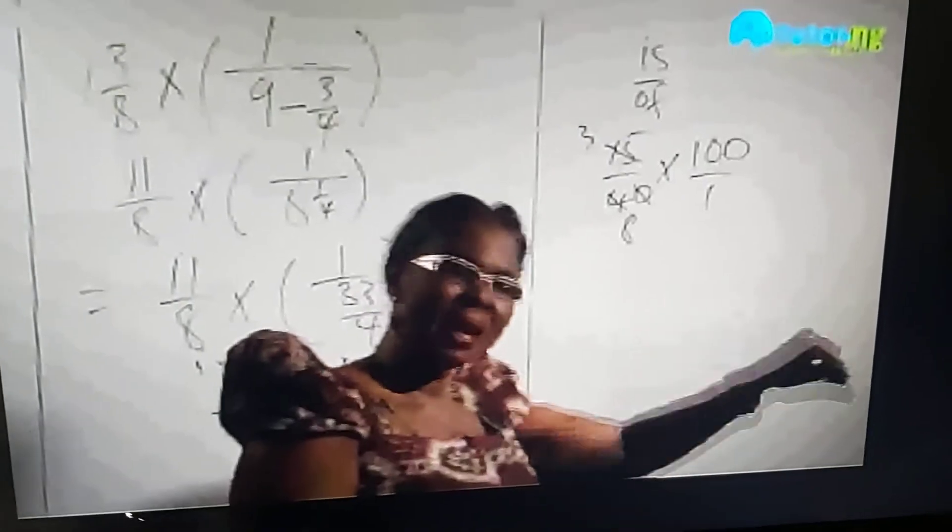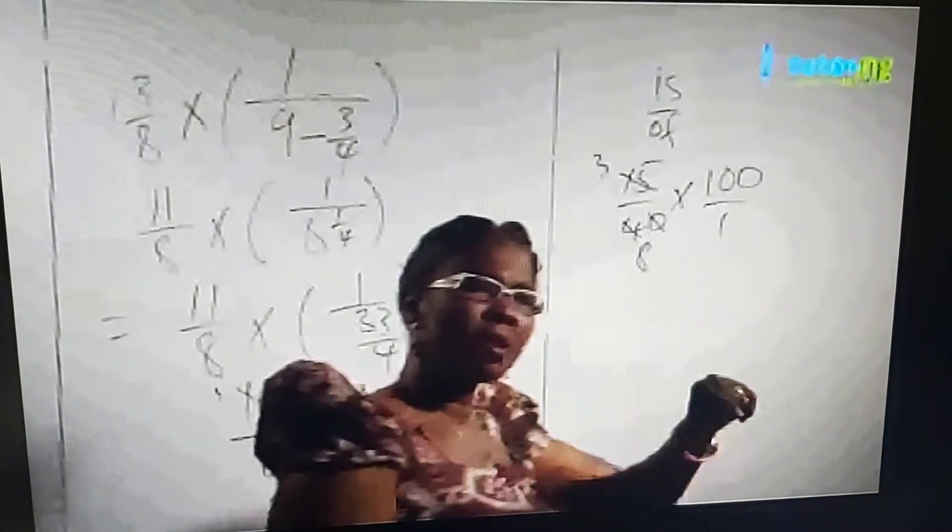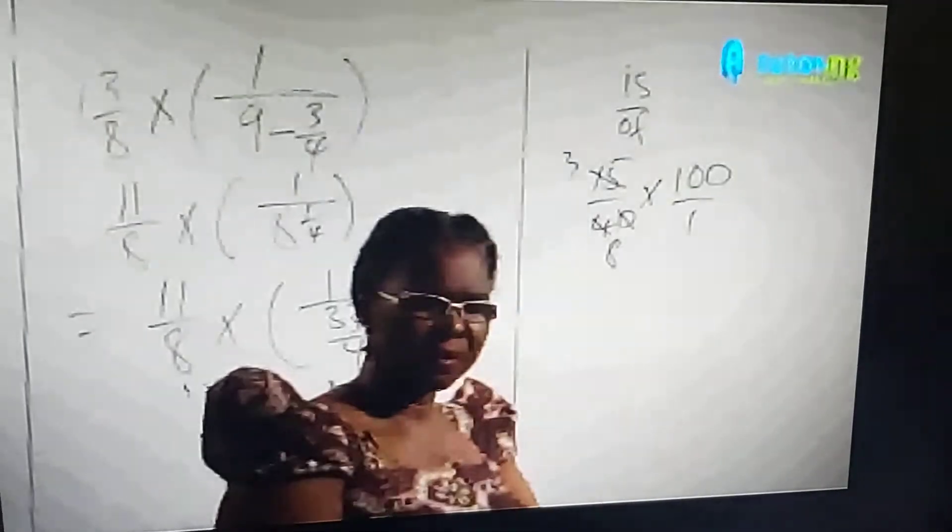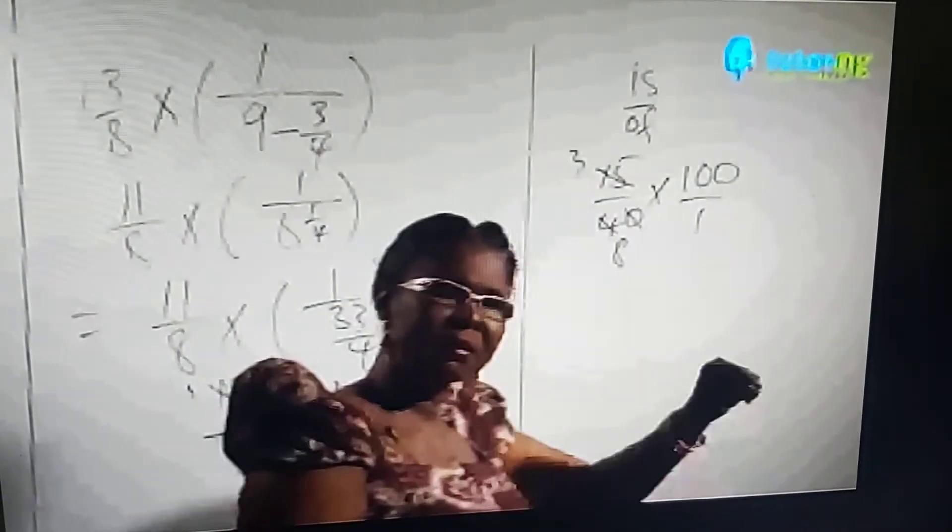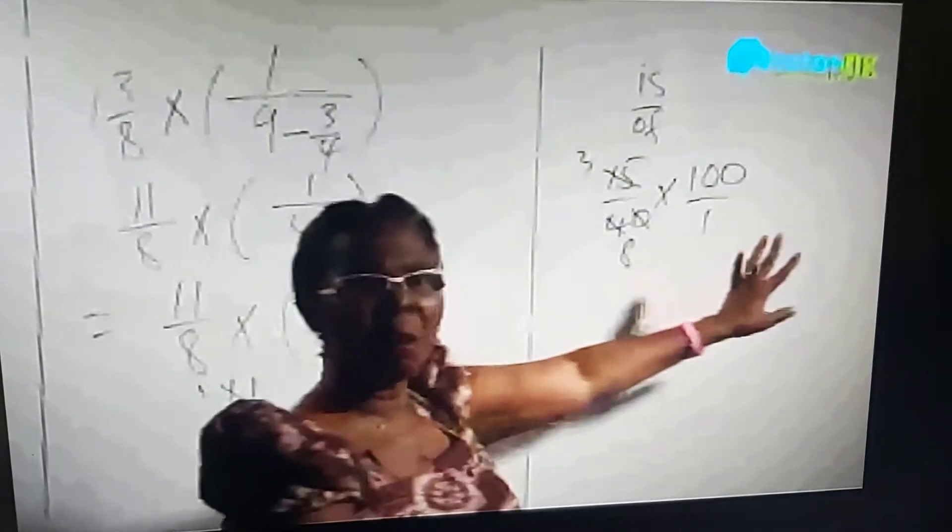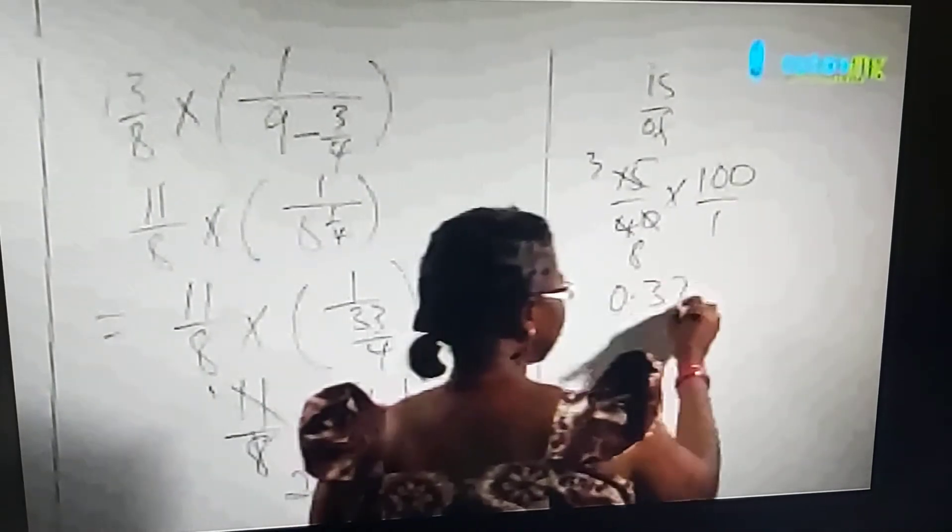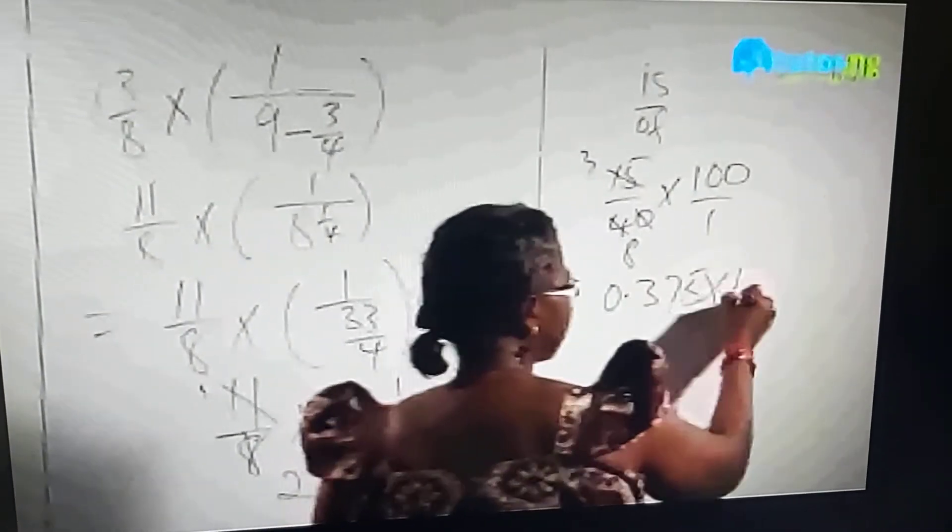That will be 3 times 1/8, which is 0.375. So instead of making this more complex, you write 0.375 times 100.